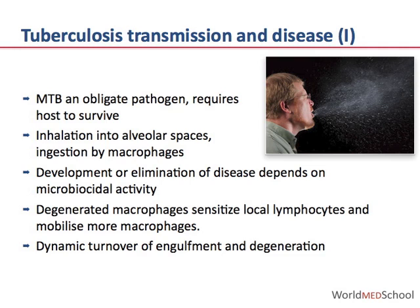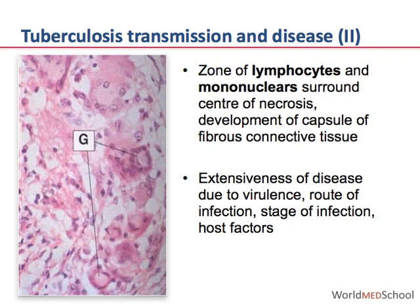Degenerated macrophages sensitize local lymphocytes and mobilize more macrophages to establish a dynamic turnover of engulfment and degeneration at the site of infection. At the site of engulfment and degeneration of the macrophages, a zone of lymphocytes and mononuclear cells surround a center of necrosis, with the development of a capsule of fibrous connective tissue. The extensiveness of disease depends on virulence of the organisms, the route of infection, and the stage of the infection.